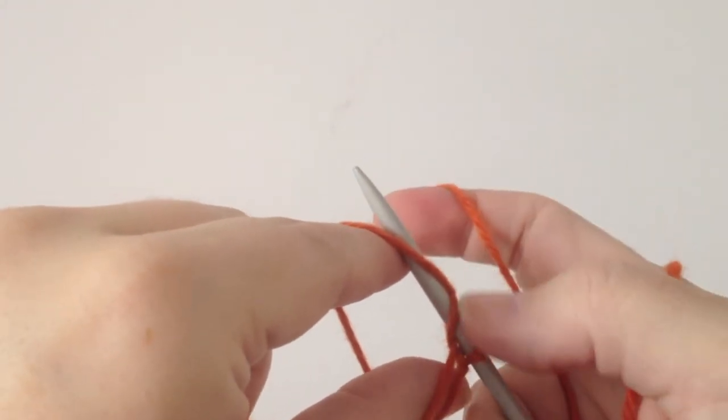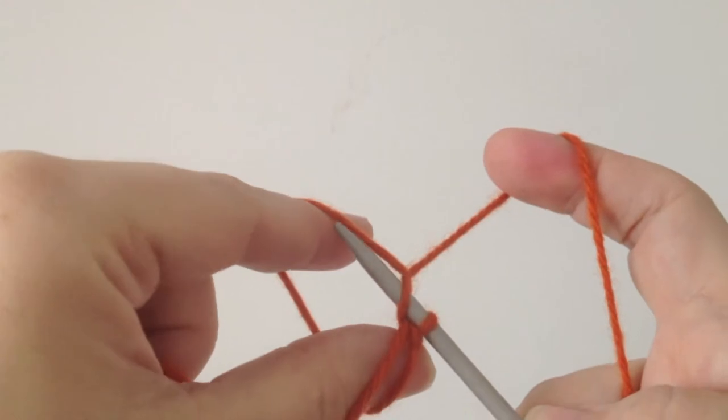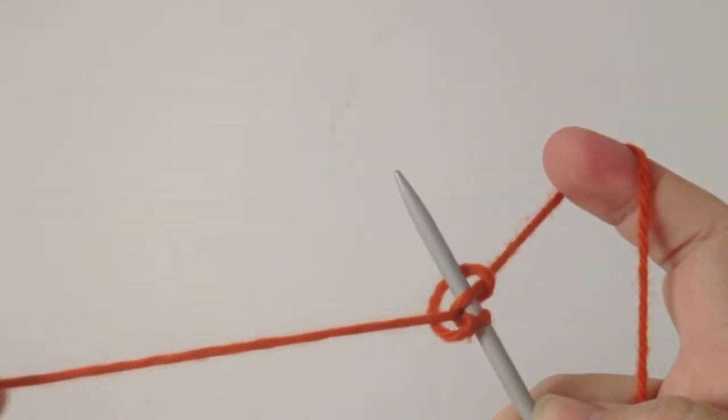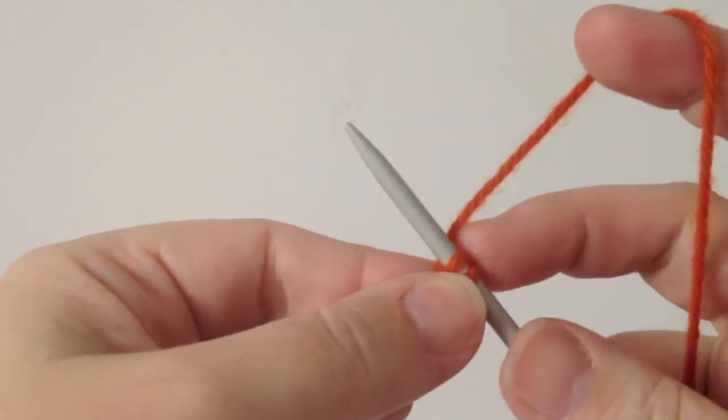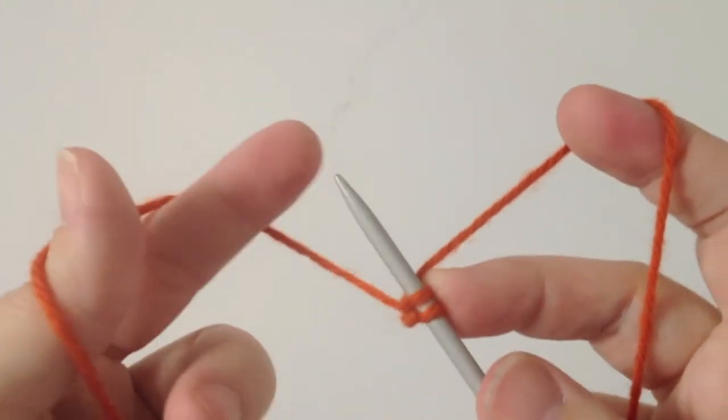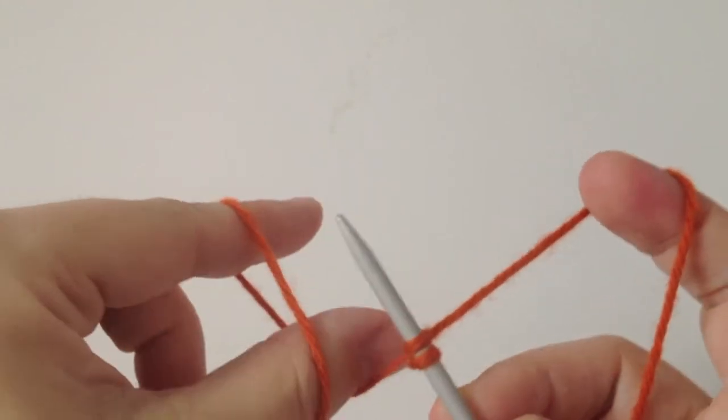Now can you see that little stitch right there? It's just starting to form. That will be our stitch. So we're going to pull the needle down and through the loop and tighten the tail. But you don't want to tighten too tight because you do want to have some elasticity. That's the whole purpose of it.